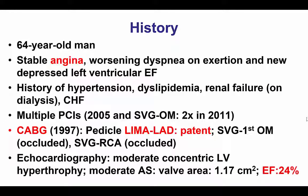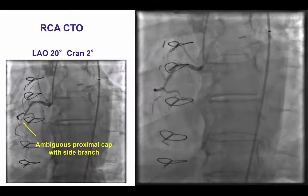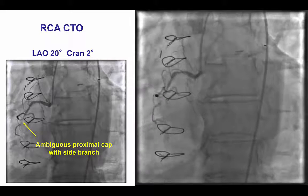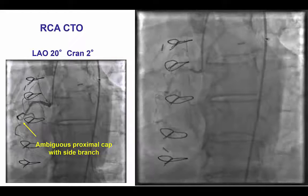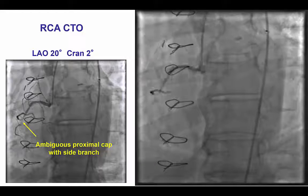The patient was a 64-year-old man presenting with stable angina as well as heart failure symptoms. He had multiple previous PCIs as well as previous coronary bypass, with the only patent graft being the LIMA-to-LAD. He had an ejection fraction of 24% and was referred for PCI of a right coronary artery CTO.